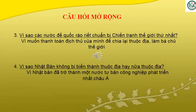Câu số ba: vì sao các nước đế quốc ráo riết chuẩn bị chiến tranh thế giới thứ nhất? Trả lời: vì muốn thanh toán địch thủ của mình để chia lại thuộc địa, làm bá chủ thế giới. Câu hỏi số bốn: vì sao Nhật Bản không bị biến thành thuộc địa hay nửa thuộc địa? Trả lời: vì Nhật Bản đã trở thành một nước tư bản công nghiệp phát triển nhất châu Á.